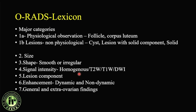There are seven criteria to use when describing ovarian lesions. You can make a table for your reporting templates to keep reports clear and quick. First, physiologic observation — are you confident it's a follicle or corpus luteum cyst? That applies to pre-menopausal females only. Second, determine whether it is non-physiological: either a cyst, a lesion with solid component, or a solid lesion. Next, comment on size using three dimensions margin to margin, and shape — only two lexicons: smooth or irregular.